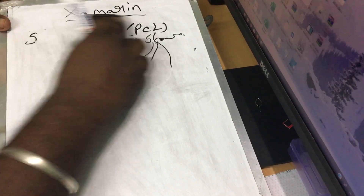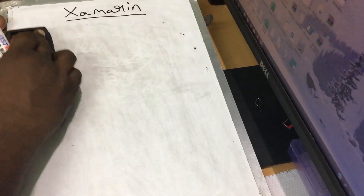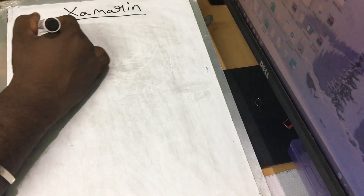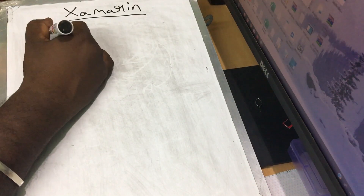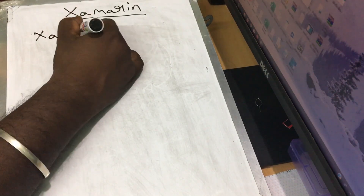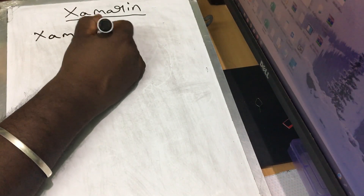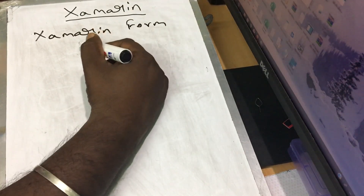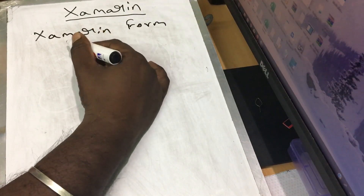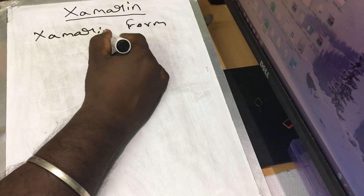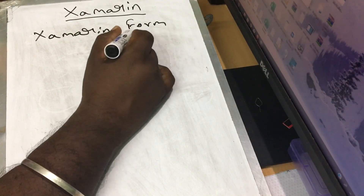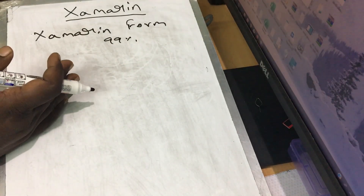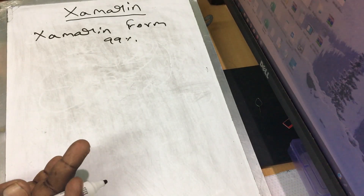In Xamarin, there are two types of projects: Xamarin native and Xamarin Forms. Xamarin Forms is used when you want the maximum code to be common — 99% of the code, including UI, is shared. In Xamarin Forms, the UI is rendered natively but defined once.